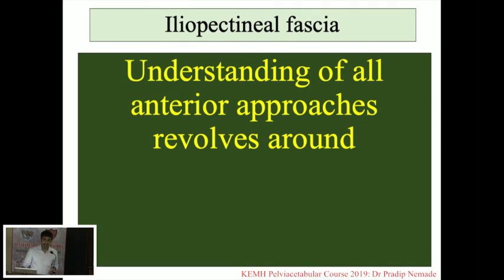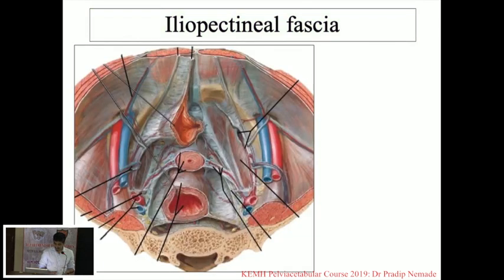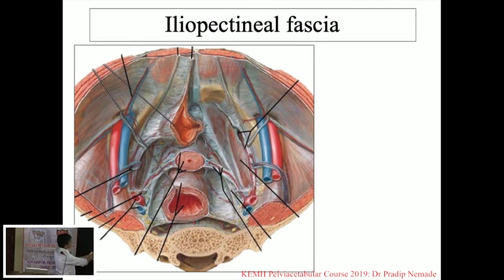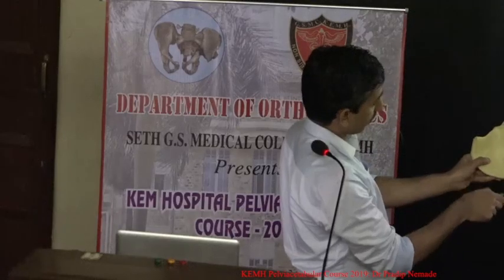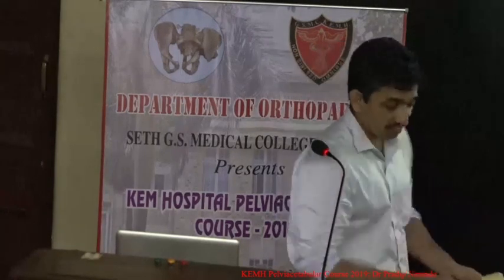Understanding all anterior approaches revolves around understanding the anatomy of the iliopectinal fascia. Looking at the pelvis, this is the pubic ramus, this is the sacrum, these are the pelvic contents, and these are the walls of the pelvis. You can see all these fascial reflections.